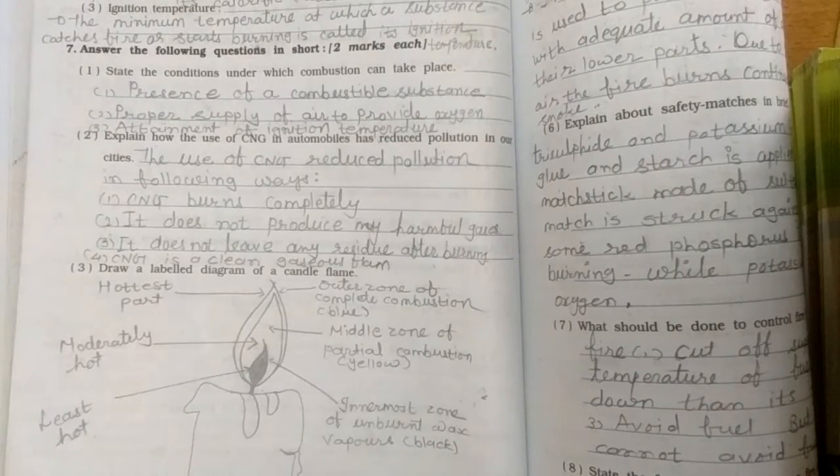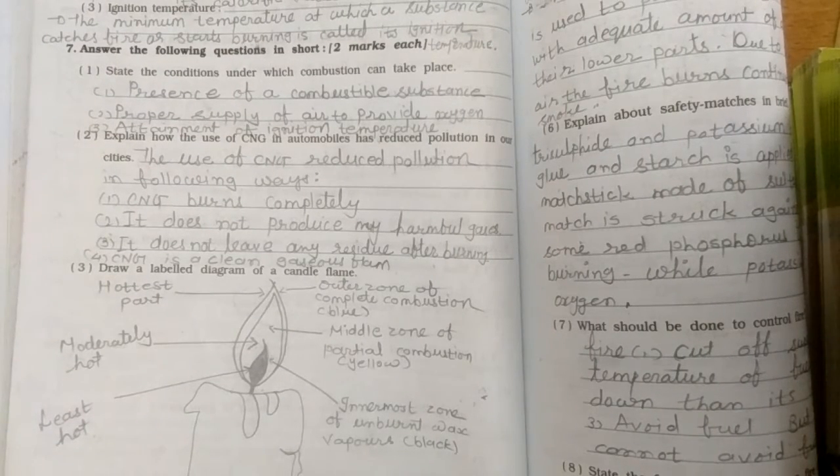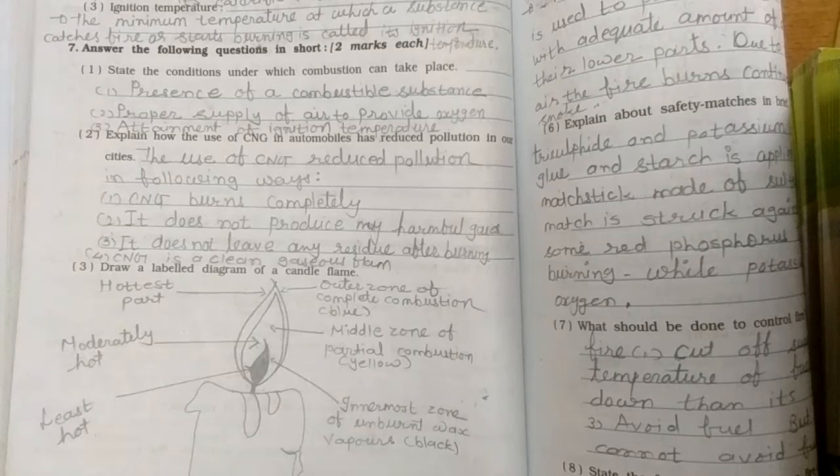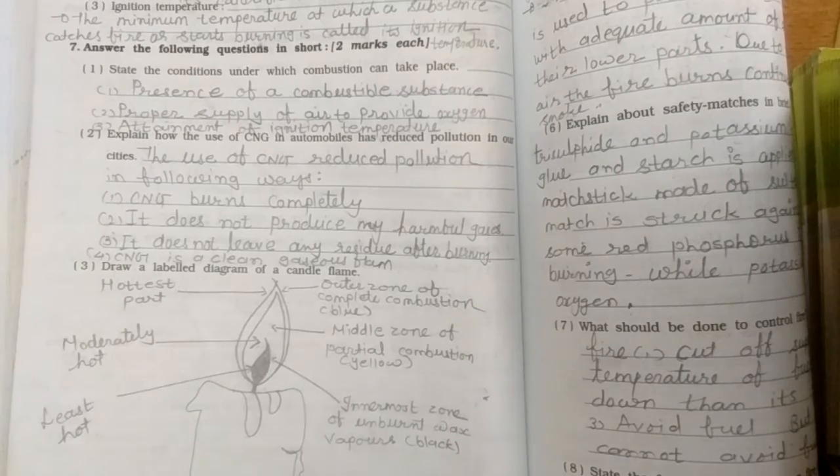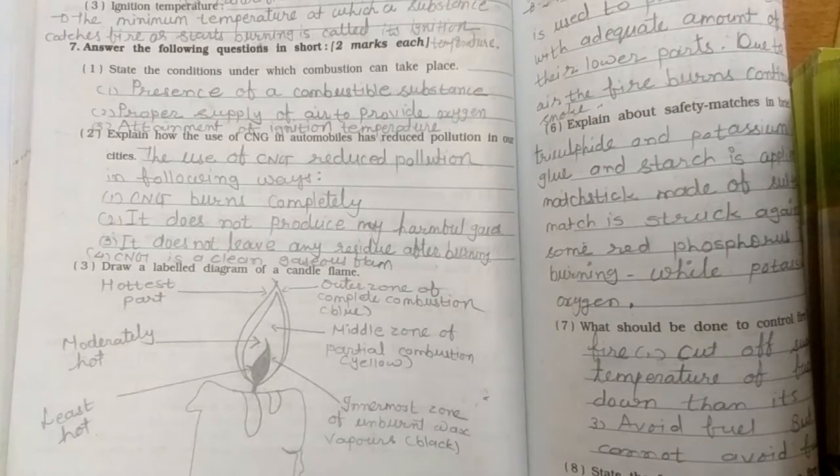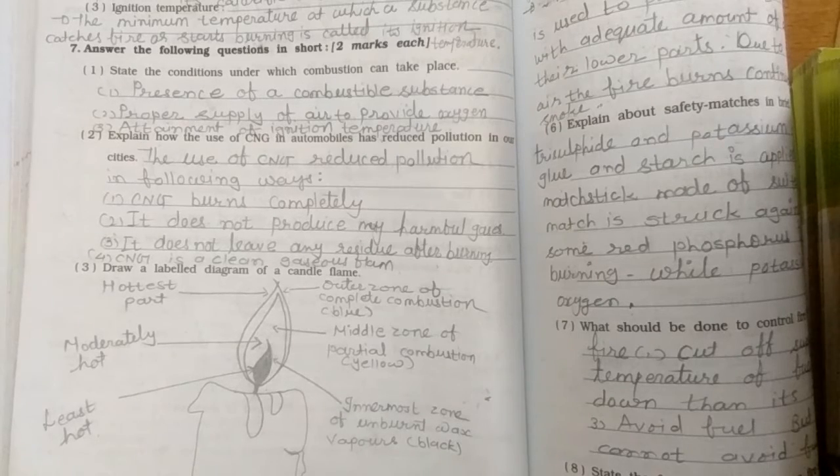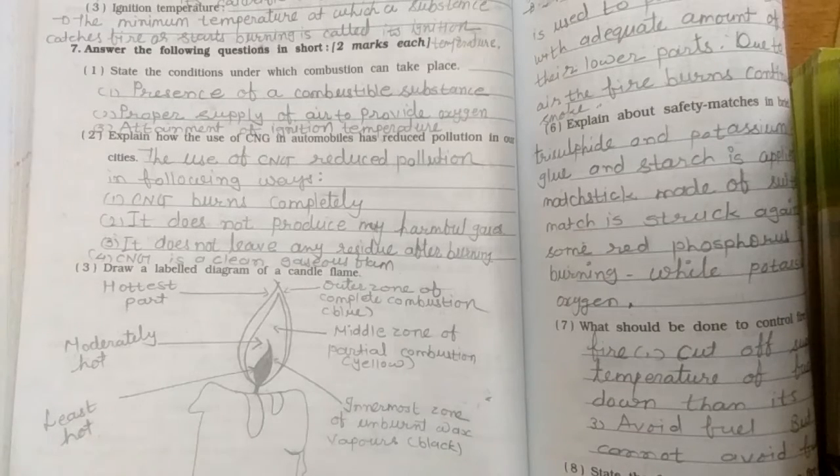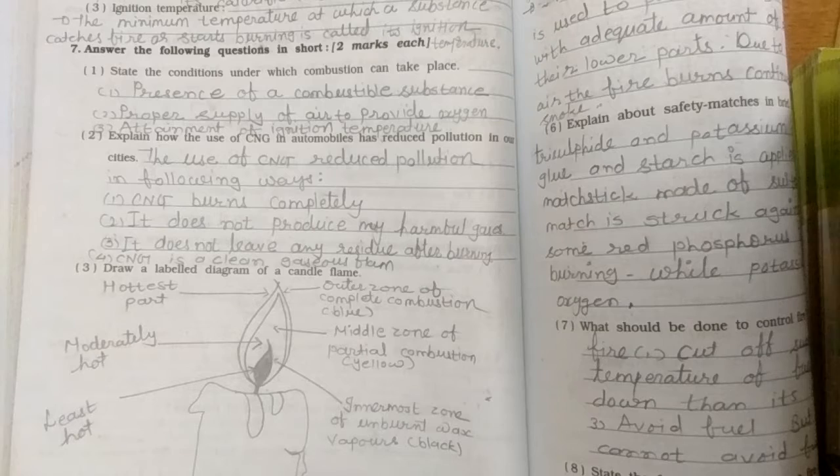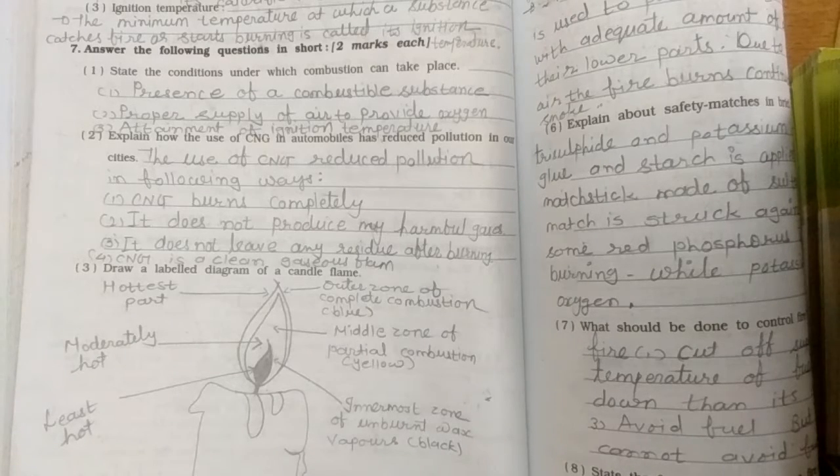Second, explain how the use of CNG in automobiles has reduced pollution in our cities. CNG burns completely, it doesn't produce harmful gases, it doesn't leave residue after burning, and CNG is clean fuel with gaseous flame.